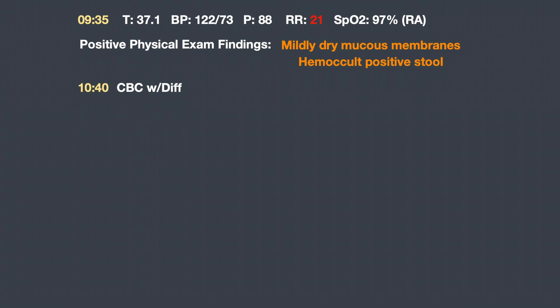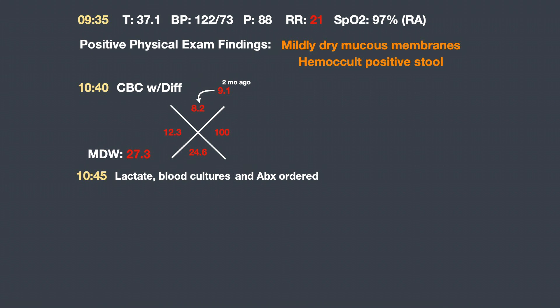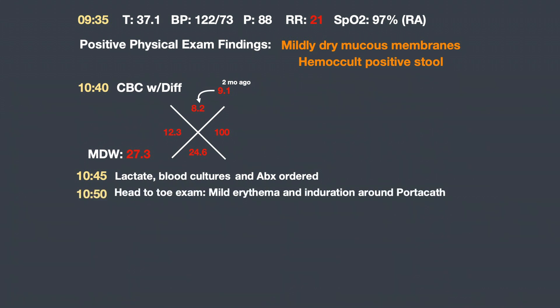At 10:40, the CBC with differential comes back. It shows a mild elevation in white count at 12.3, anemia with a hemoglobin of 8.2, and thrombocytopenia with a platelet count of 100,000. Comparing the hemoglobin to a previous lab value from about two months ago, there is a decrease from 9.1 to 8.2. At the same time, MDW comes back elevated at 27.3. Understanding the value of MDW in suggesting underlying infection in the acute care setting, the providers order additional labs. At 10:45, they place orders for lactate and blood cultures. Considering the patient's immunocompromised state from chemotherapy, history of cancer, and additional comorbidities, they also go ahead and order antibiotics. The combination of elevated MDW and elevated white count is suggestive of an underlying infection.